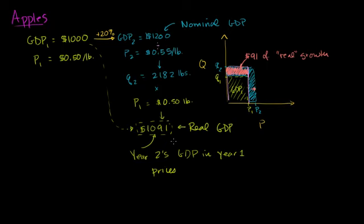In practice, it's kind of hard to measure real GDP precisely. This was a simple economy with only one product. But if you have many, many products — gazillions of products in a real economy — and both prices and quantities are adjusting, it's not so easy to figure out how to adjust for price changes. But the folks running the national income accounts do try to do this, so they can get a sense of how much was the actual real growth.